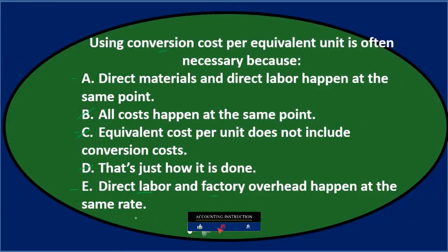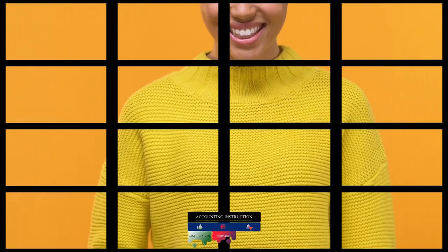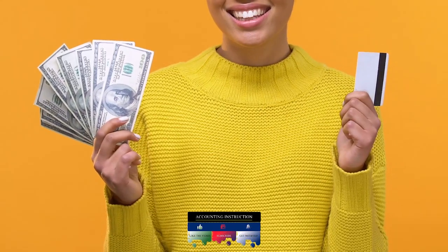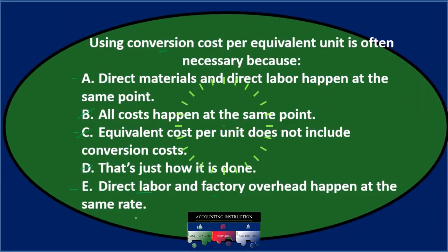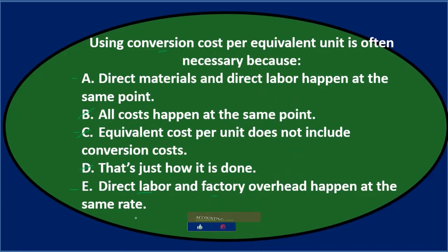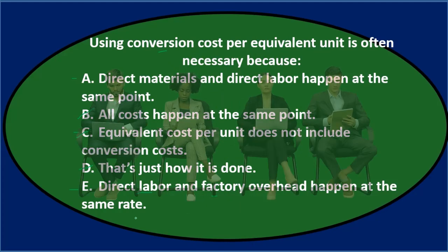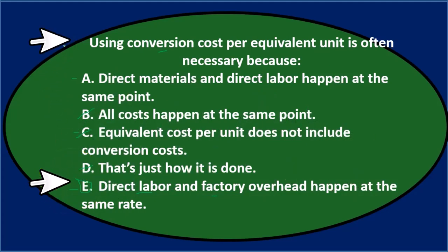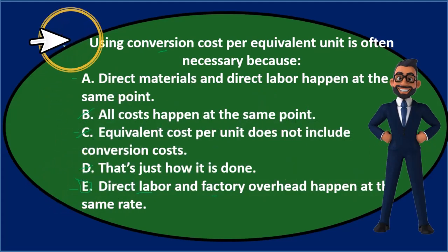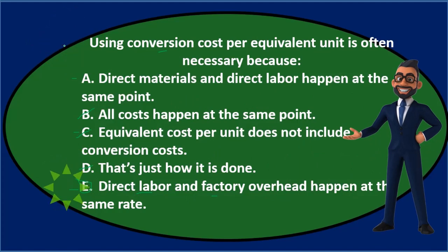In a process cost system — like an automated assembly line making taffy — there might not be a lot of direct labor, so labor and overhead can be grouped together because of the relatively small size of labor compared to overhead. In any case, the answer is E: using conversion cost per equivalent unit is often necessary because direct labor and factory overhead happen at the same rate.